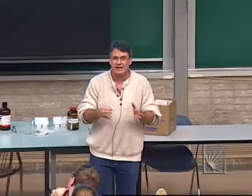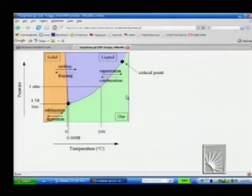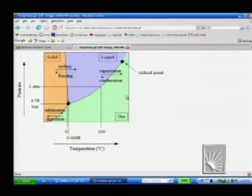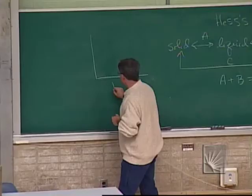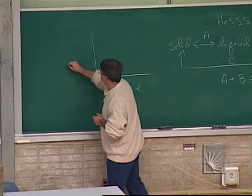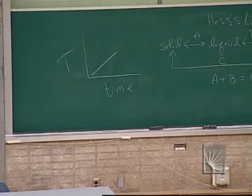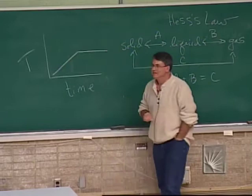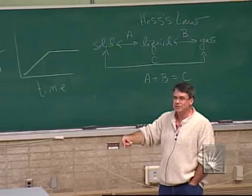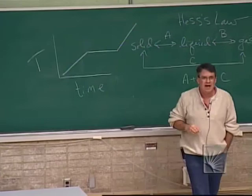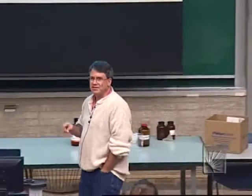All of these transitions occur at a constant temperature. If I look at the phase diagram and pick a pressure — say, one atmosphere — the temperature at which solid and liquid are in equilibrium is constant. If I do a plot of temperature versus time, as long as I have a solid material, the temperature can climb. At some point it will stay constant while I'm transitioning from solid to liquid. Only after all of the solid has melted can the temperature climb again. If I change the pressure, the temperature at which that occurs is going to change.